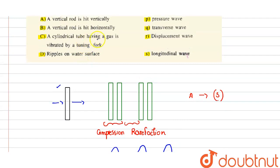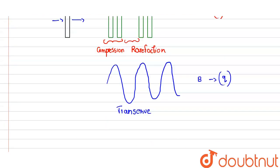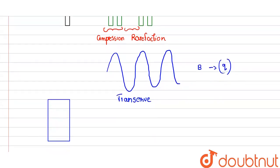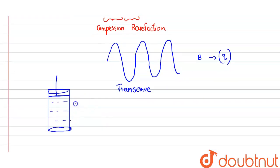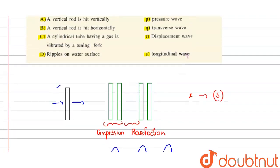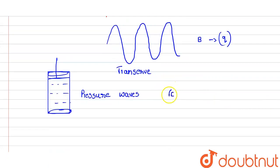In the third one, a cylindrical tube having a gas is vibrated by a tuning fork. We have a cylindrical tube with some gas inside it, and it is vibrated using a tuning fork. Since the gas is present in a closed container, the waves formed will be pressure waves. So, option C corresponds to option P, which is pressure waves.